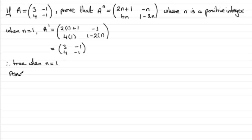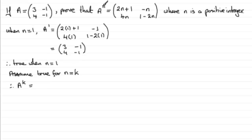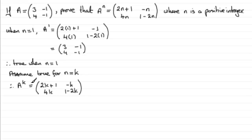Now we assume true for n equals some positive integer k. On that basis, A to the power k equals the matrix with entries 2k+1, -k, 4k, 1-2k. That is our assumption for A to the power k.